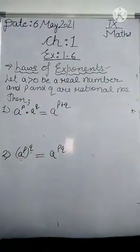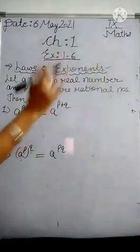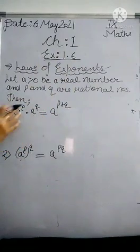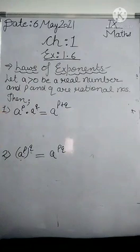Here, let a greater than 0 be a real number. Real number means a can be rational or irrational, and p and q are rational numbers. Rational number means it can be integer, whole number, or in fractional form. So let us start our first law.